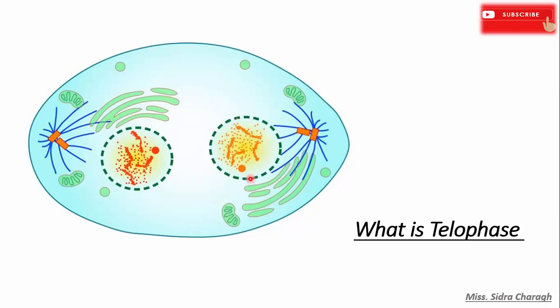Therefore, at the beginning of telophase, the daughter chromosomes are at the opposite poles. During telophase, the nuclear membrane forms surrounding the daughter chromosomes, which in turn forms two daughter nuclei. The daughter chromosomes also undergo decondensation to form chromatin.